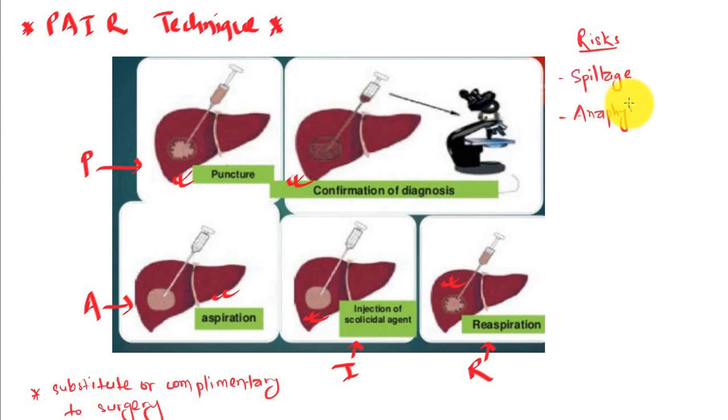The risks are spillage, anaphylactic shock, hemorrhage, and sclerosing cholangitis if cyst ruptures into the biliary tree.